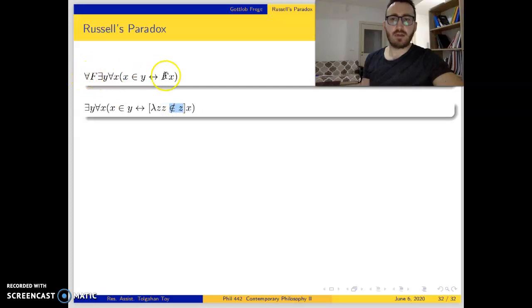Since this holds for all concepts, for all f, we can use this concept. Let's do lambda conversion. We have a function and an argument, so we apply this argument to this function and get the result: x is not an element of x.